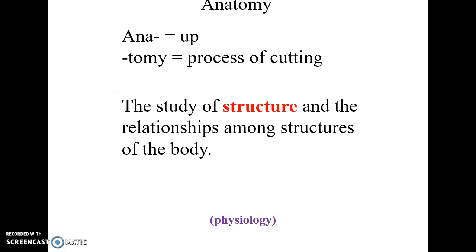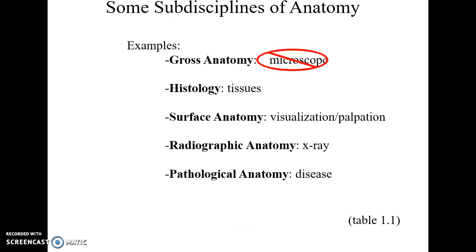Physiology is the study of function and the relationships of the various functions of the structures of the human body. Anatomy has a number of sub-disciplines: gross anatomy — 'gross' just means things you can see with the unaided eye — and histology, which is the study of the tissues found in the human body.